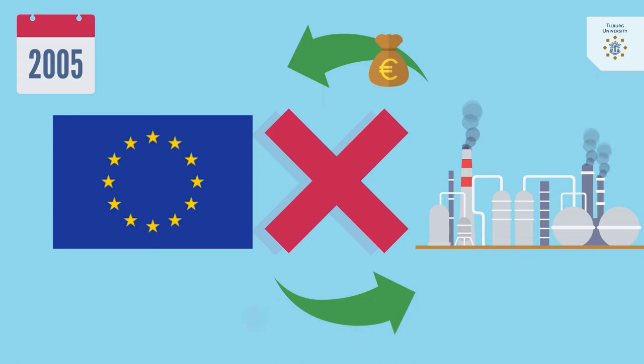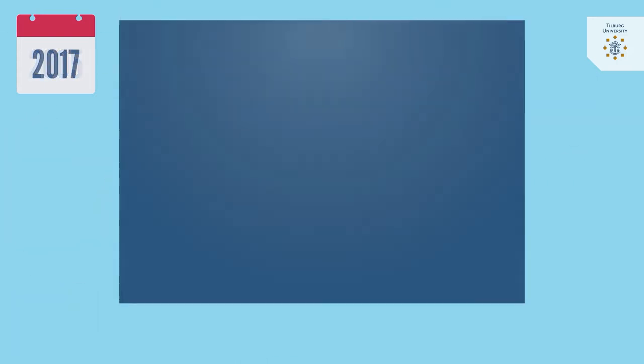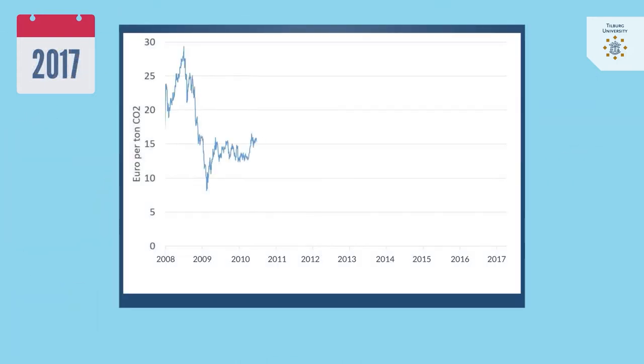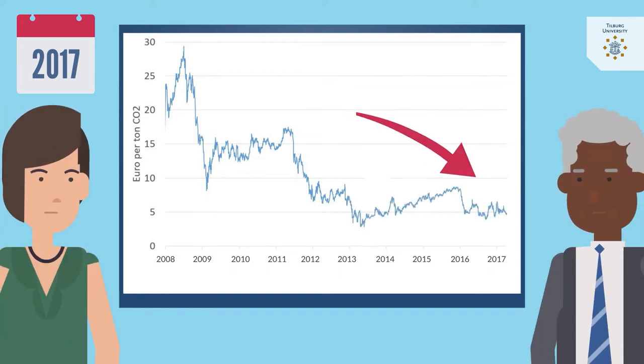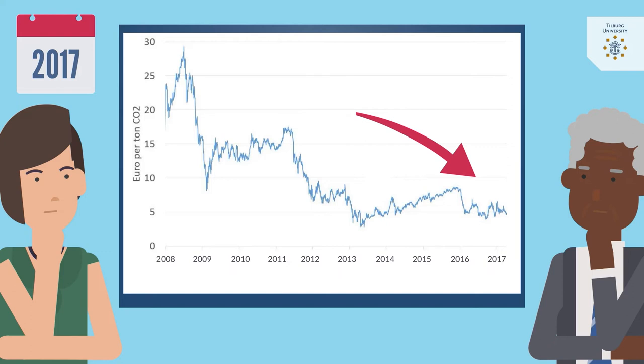The system turned out not to be very effective. By the end of 2017, prices were below €10 per tonne of CO2, and experts agreed that such prices are insufficient to engage in serious emission reduction activities. Concerned citizens and experts worried that the emission trading system had turned out a failure.